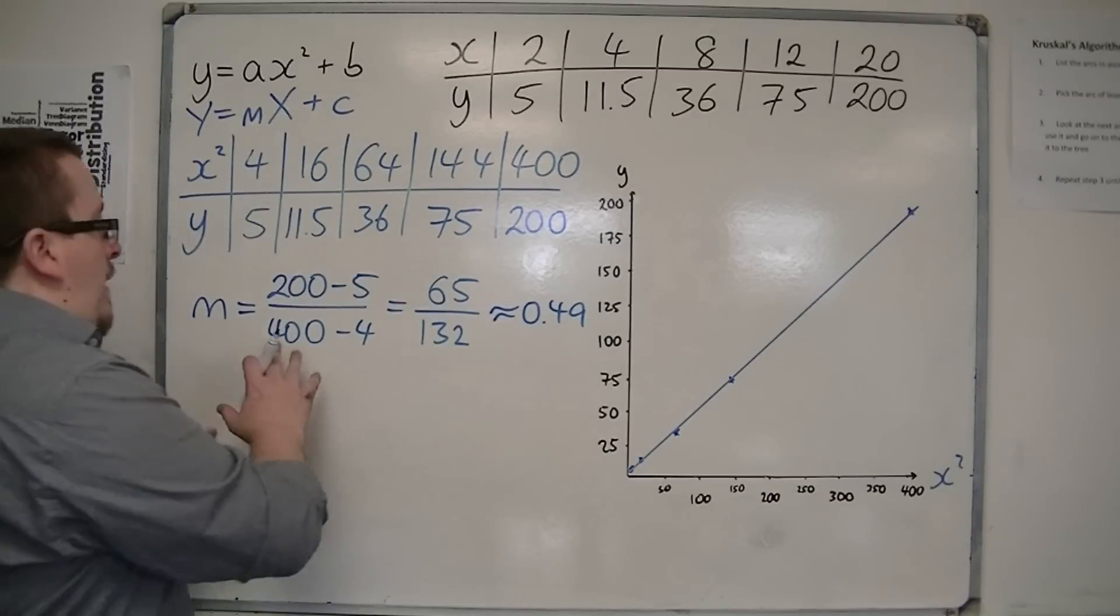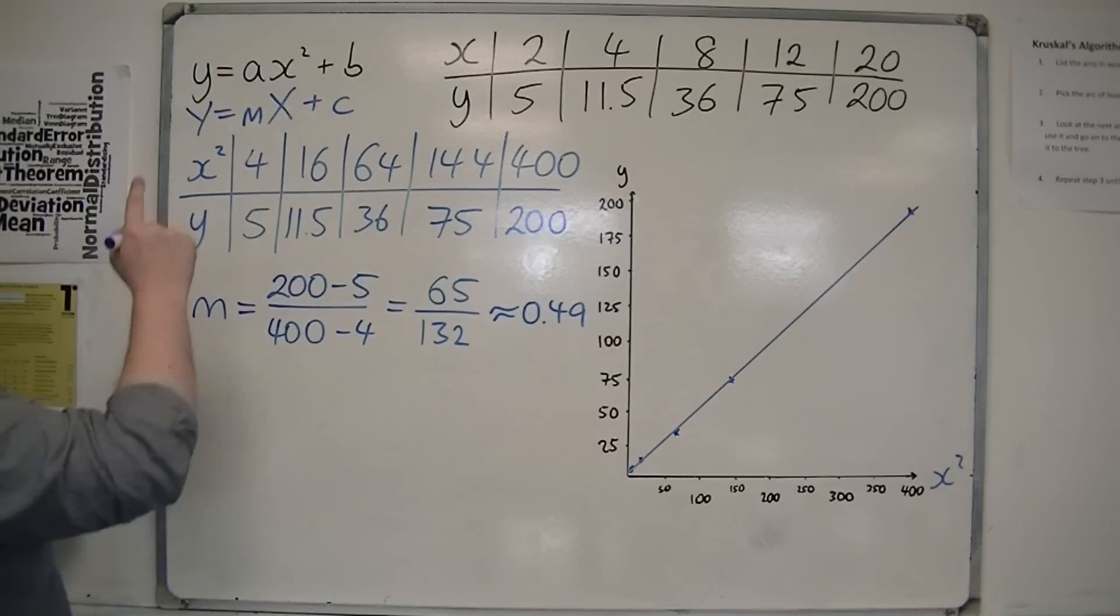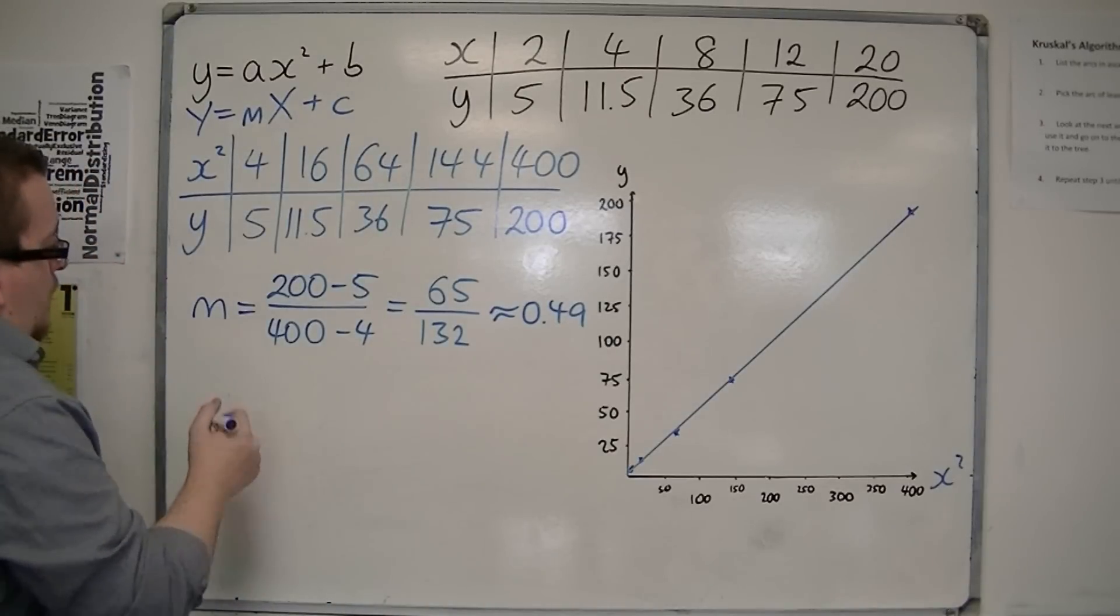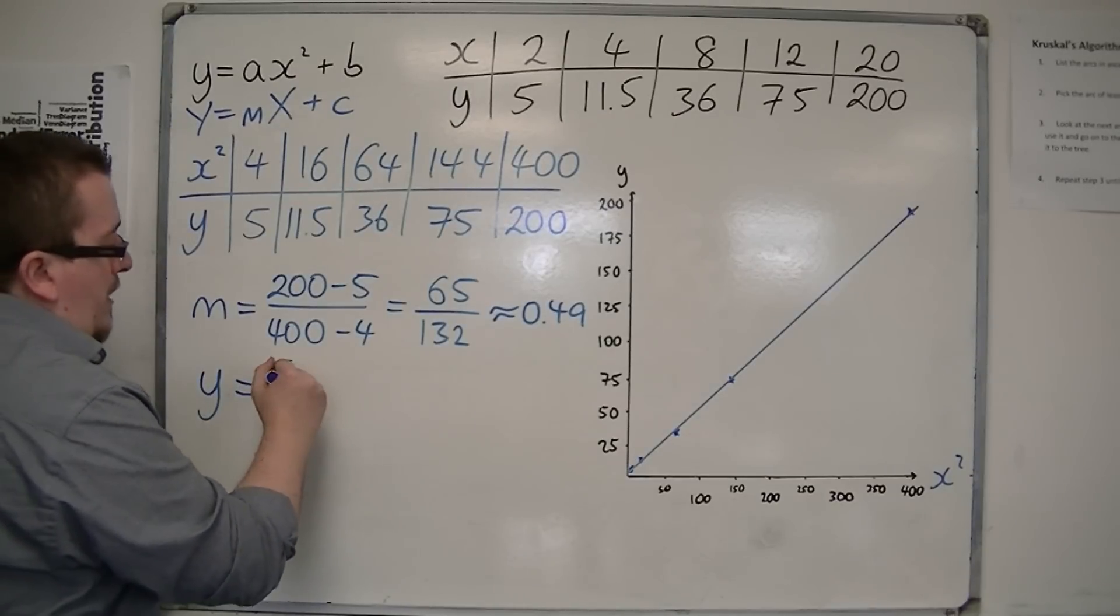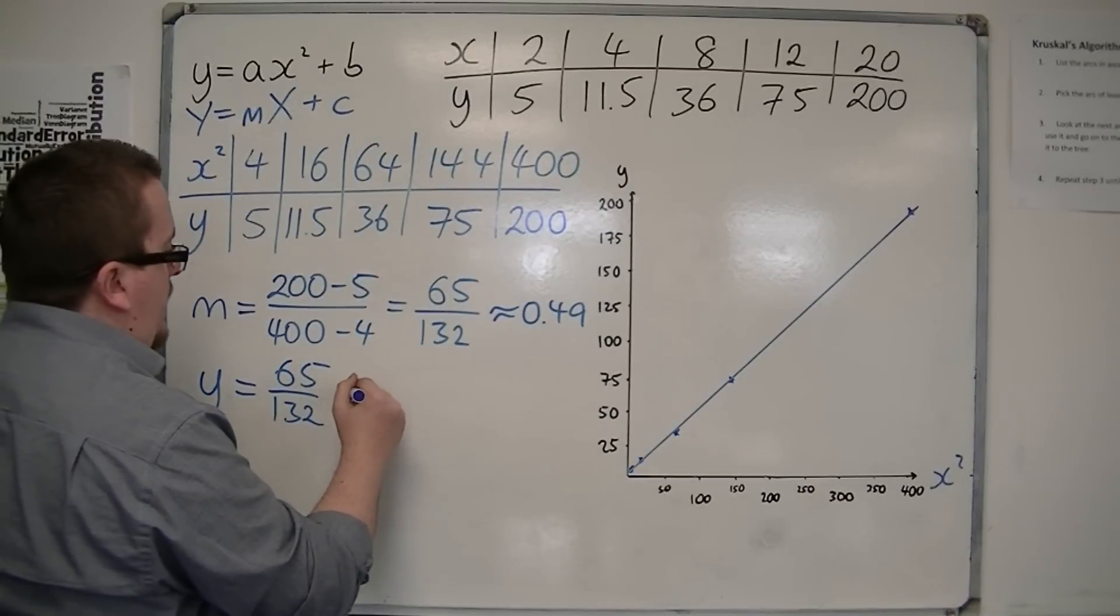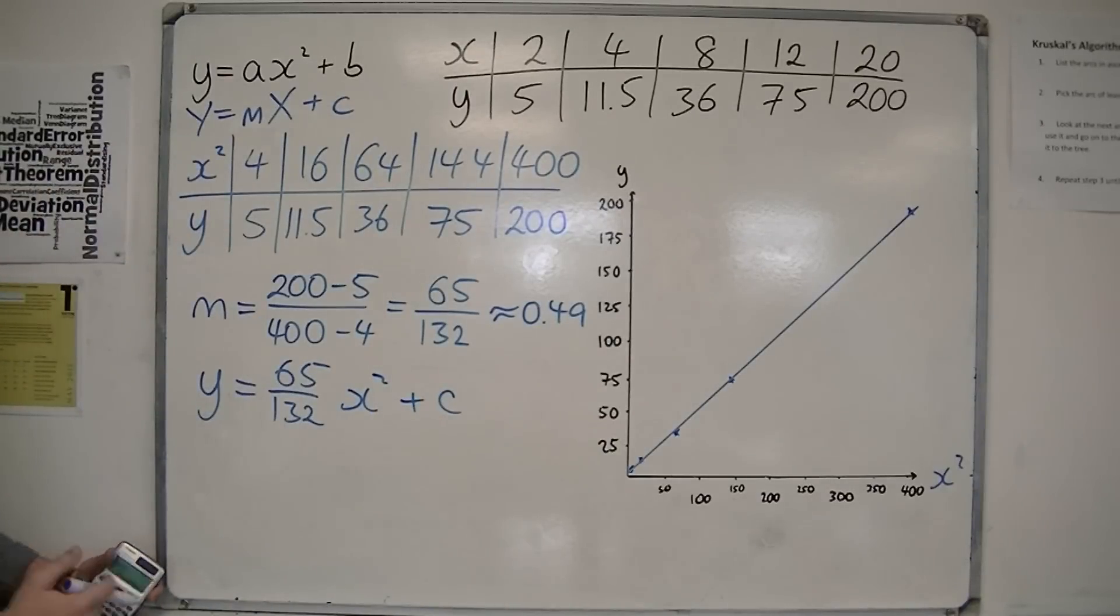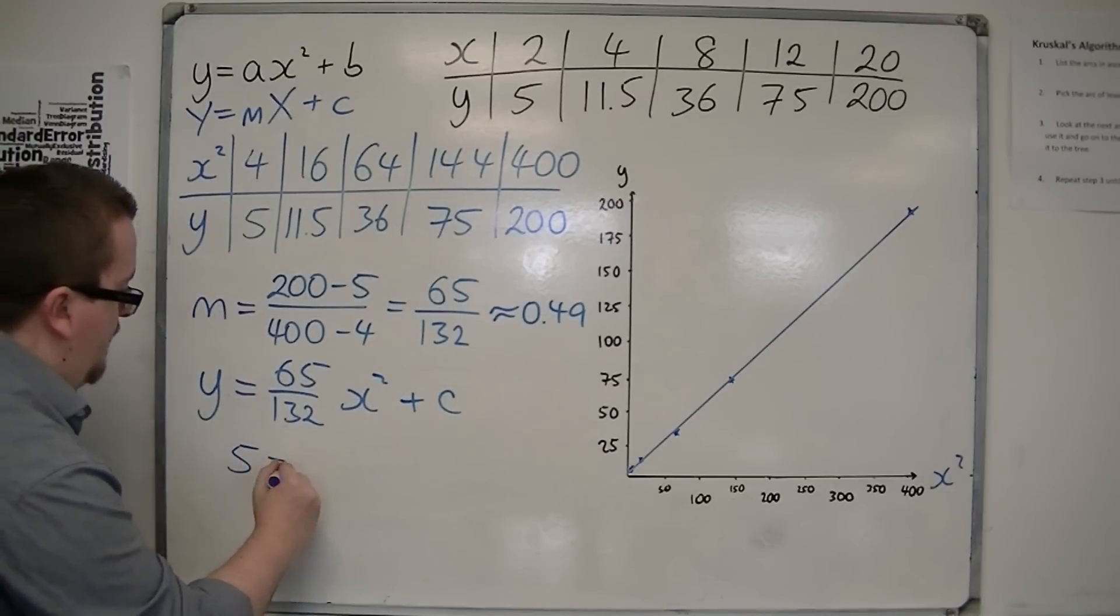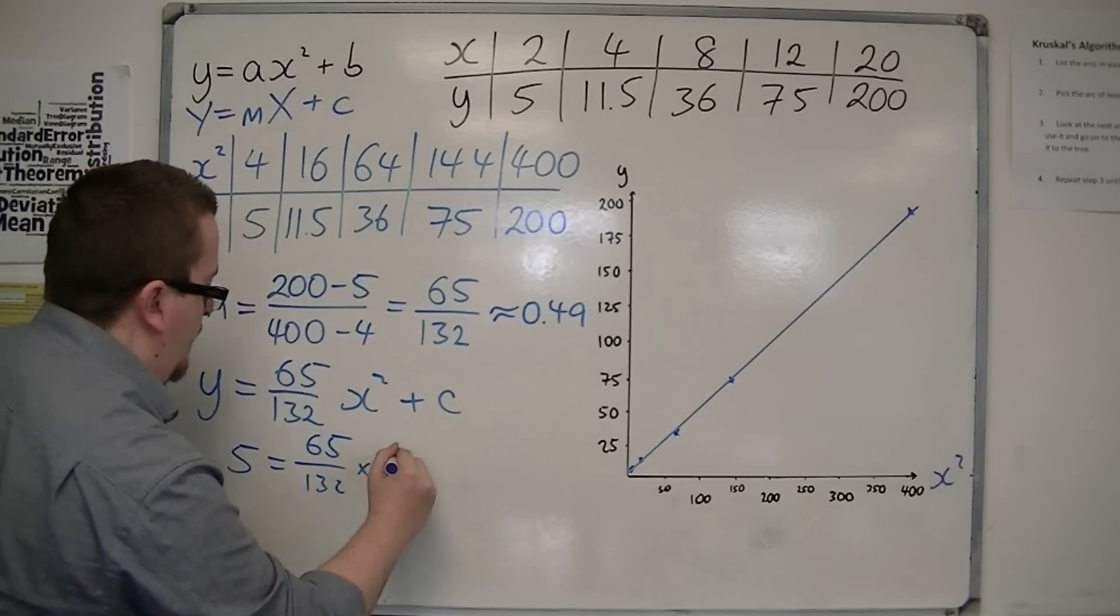So that will be an estimate for a. Now the value of b, I can work out because I can say that would mean that y is equal to my 65 over 132, x squared plus c. So I'm just going to use x squared plus c. So if I just plug in a value, so say 4, 5, then 5 is 65 over 132, times by 4, plus c.